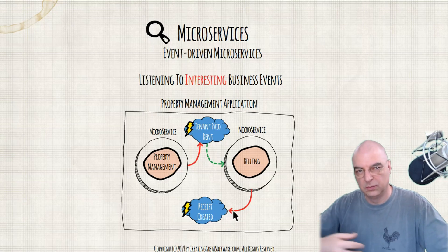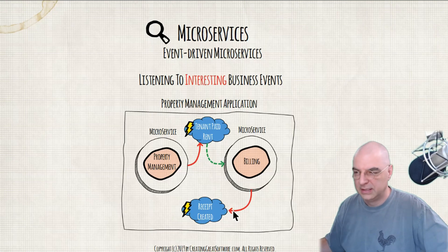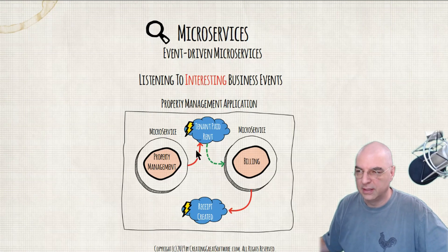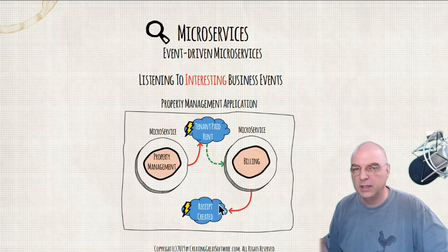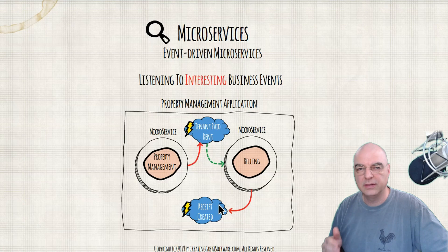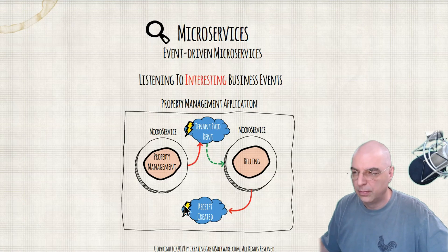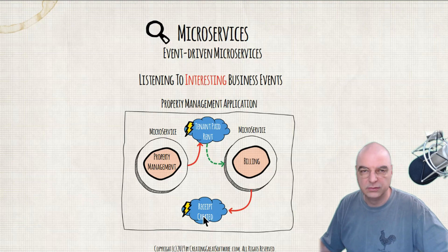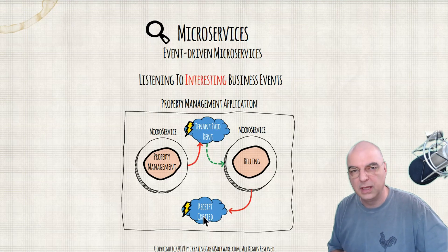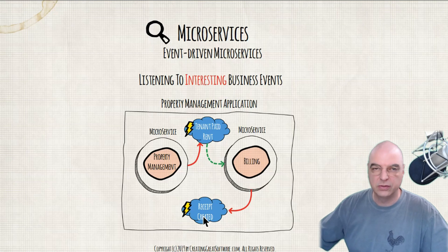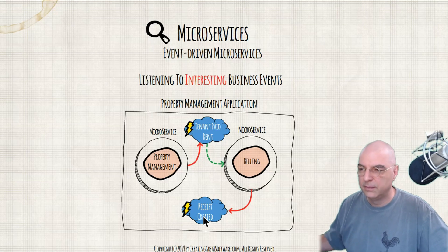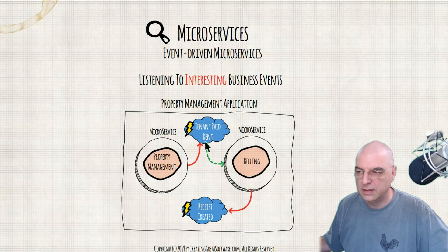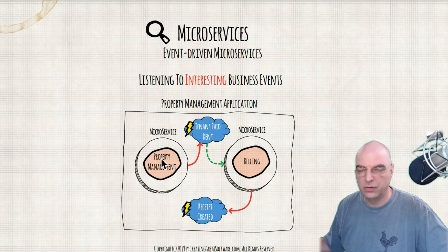This can go on and on — services creating multiple domain events that other services listen to. The important part is that these things have already happened; nobody can change this fact. Receipt is created, and some other service can consume it — maybe send an email, generate a PDF, or create other artifacts. As you can see, these two microservices do not communicate directly; they only publish what has already happened in their domain, because they are the controllers of their domain.